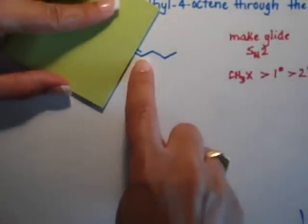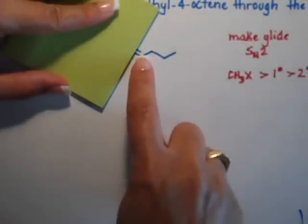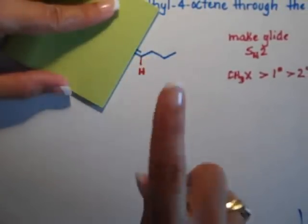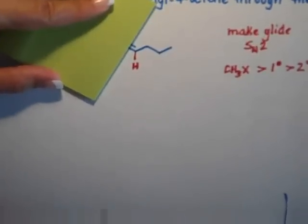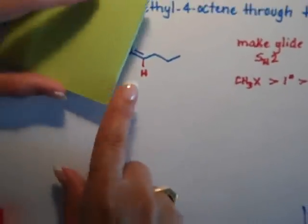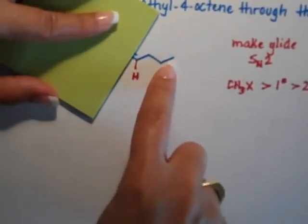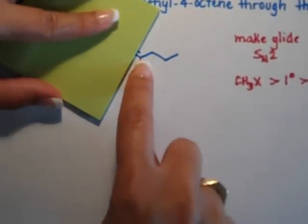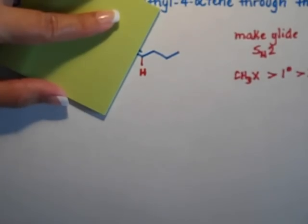So right here, this carbon is attached to one other carbon, so that's a primary carbon. Notice that I'm not taking into account the other carbon. I'm just looking at the chain that's attached to it. So that carbon could have been a primary alkyl halide.